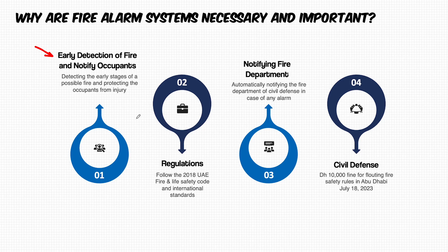Second, it's about following the UAE Fire Life Safety Code of practice and regulation of civil defense, as well as international standards. This course focuses on the UAE Fire Life Safety Code of Practice 2018 Chapter 8, which relates to the fire alarm system, and also NFPA 72, which covers the fire alarm detection system.